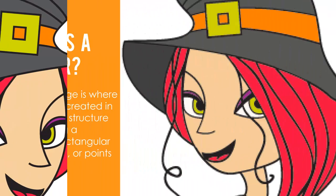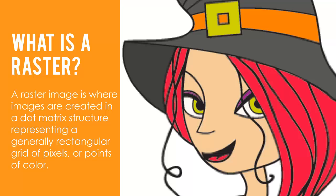A raster image, sometimes called a bitmap, is where images are created in a dot matrix structure representing a generally rectangular grid of pixels or points of color.